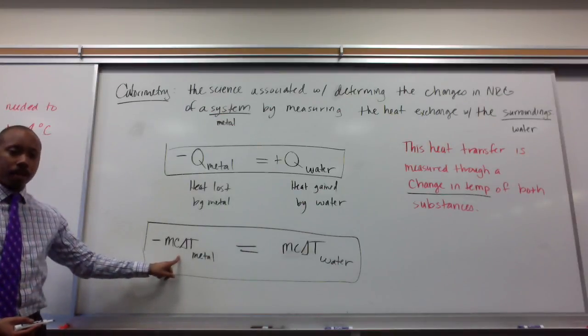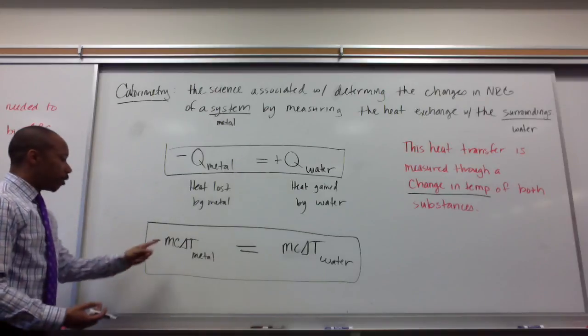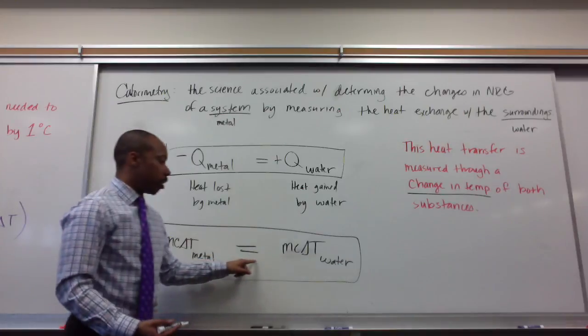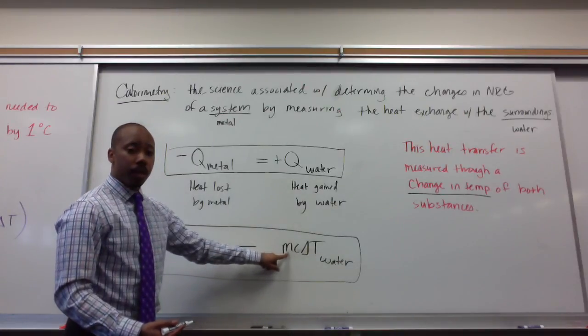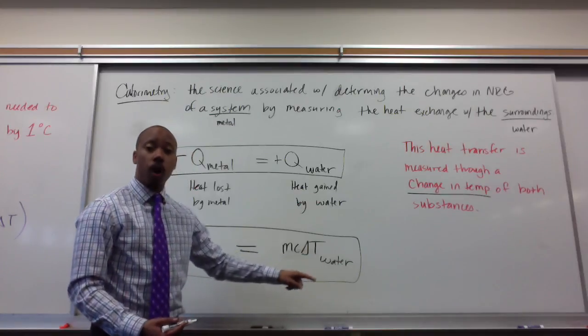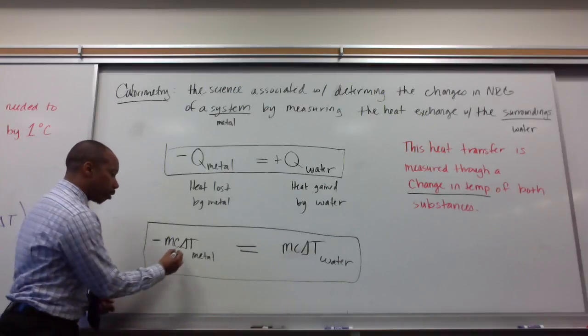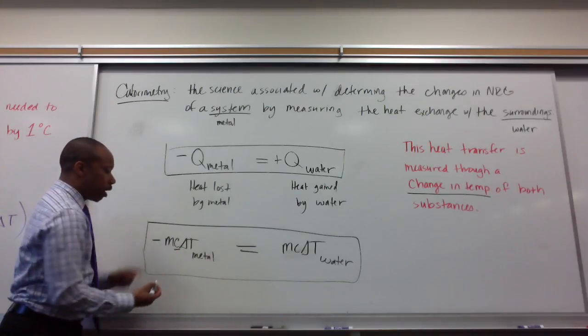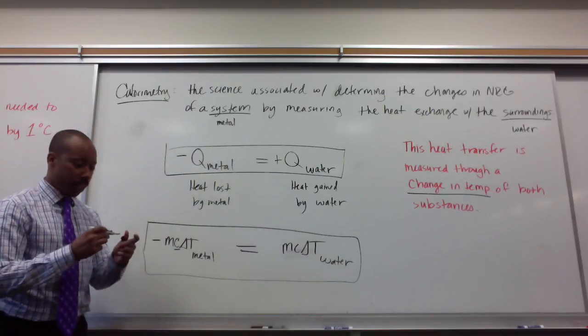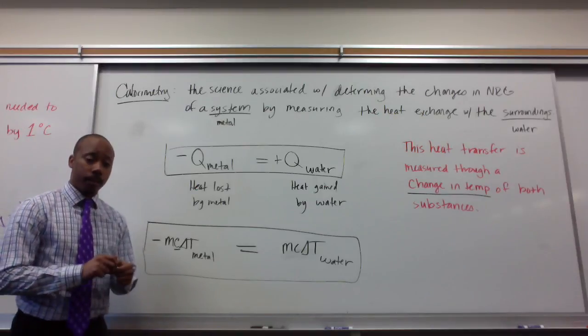The heat lost by the metal is equal to the heat gained by the water, so I can use the mass of the metal, the specific heat of the metal, and the change in temperature of the metal in relationship to the mass of the water, the specific heat of the water, and the change in temperature of the water. These two values should be equal, and if I didn't know the specific heat of my metal, which was what our laboratory was about, I can use these other parameters to solve for the specific heat of my metal. This is calorimetry, gentlemen. You'll be using this in a problem set very soon.